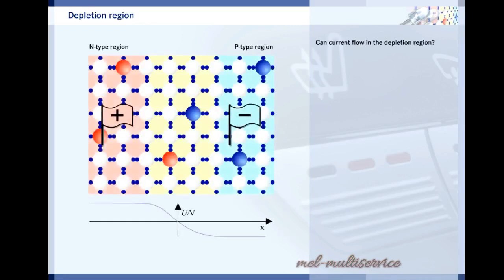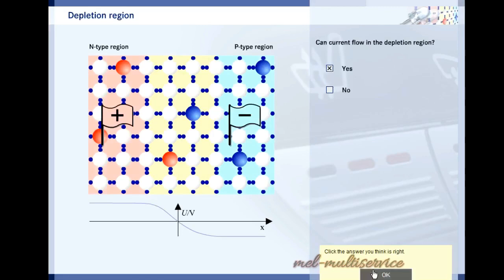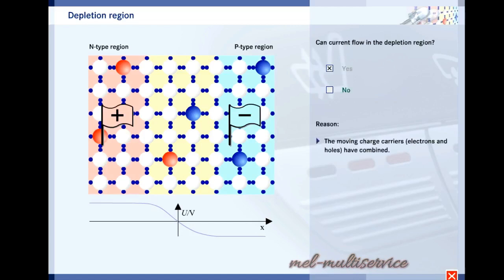Can current flow in the depletion region? No. Current cannot flow in the diffusion zone because there are no charge carriers which can move freely. The electrons and holes have combined. Although the atoms of the doping elements are charged, they cannot move.